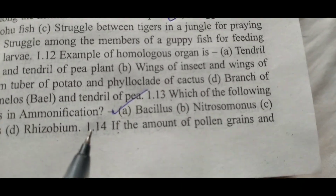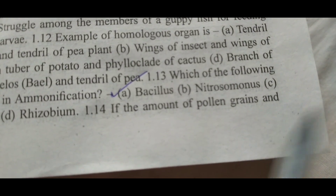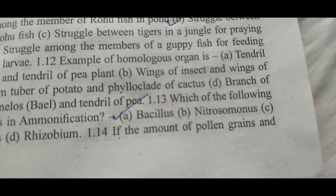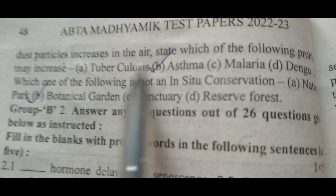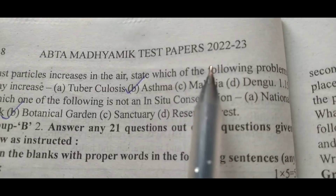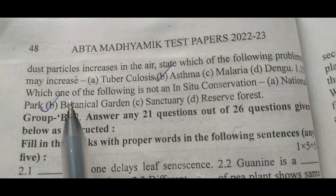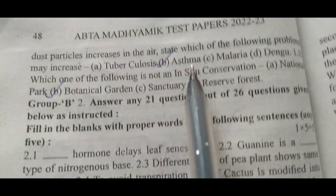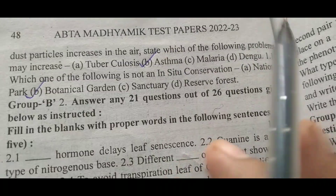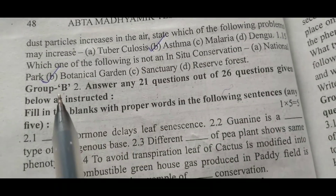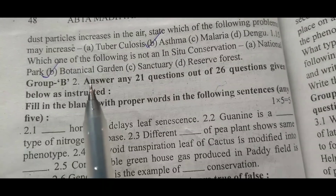Next, question 1.14: If the amount of pollen grains and dust particles increases in air, state which of the following problems may increase? Right answer B — Asthma. Next, 1.15: Right answer will be B — Botanical garden.